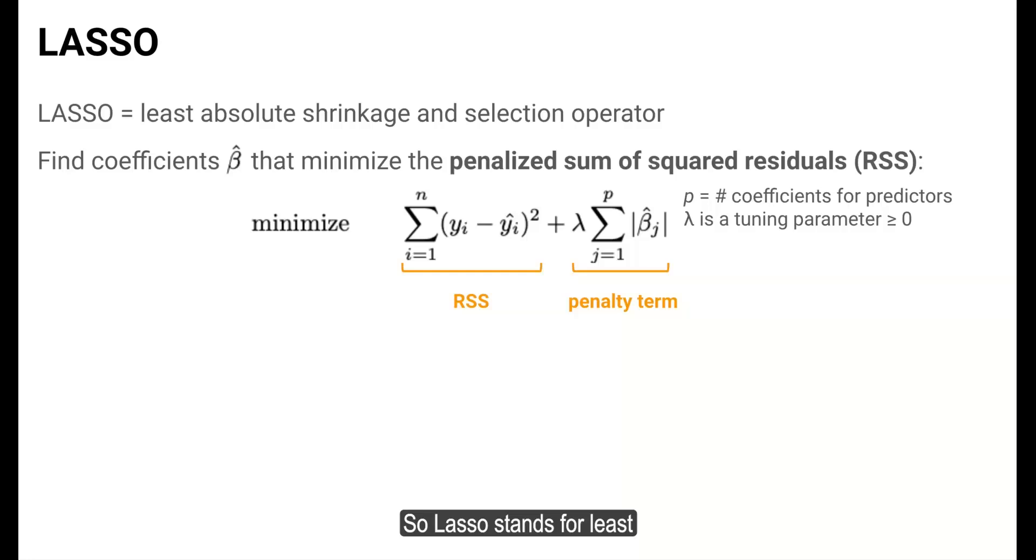So LASSO stands for least absolute shrinkage and selection operator. And the criterion that it uses to find good beta coefficients is to minimize a penalized version of the sum of squared residuals. The first part of this quantity is the familiar RSS, and the second term is an added penalty term.